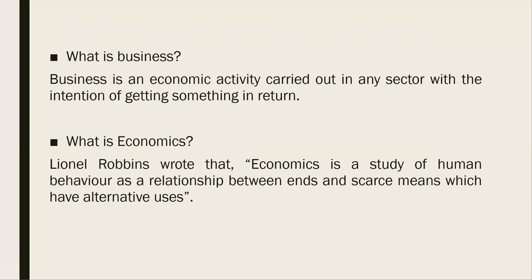Now, what is economics? You are well aware of this from 11th and 12th commerce. Robbins defined economics as the study of human behavior as a relationship between ends, scarce means, and means that have alternative uses. In this definition we need to focus on three basic things. First, 'ends' means wants — the things we want to satisfy. For example, I have a need for food, clothes, and many other things — all these are considered human wants.